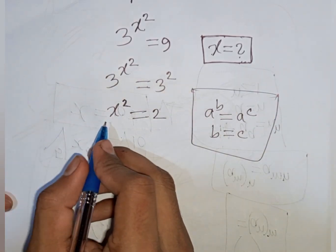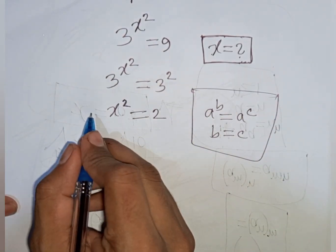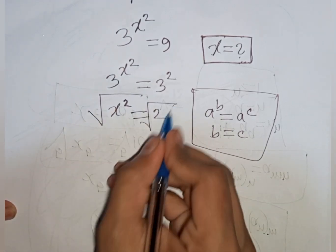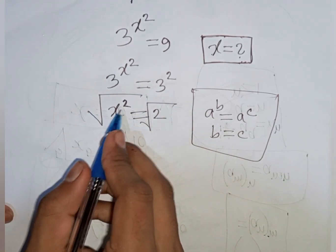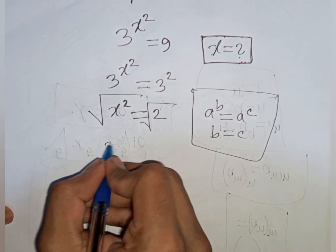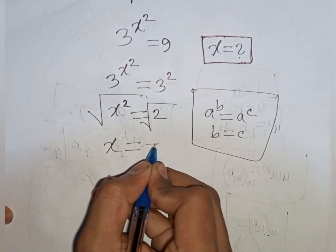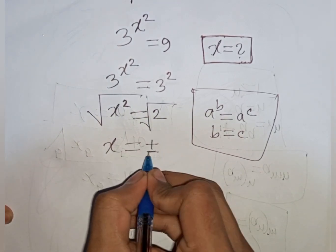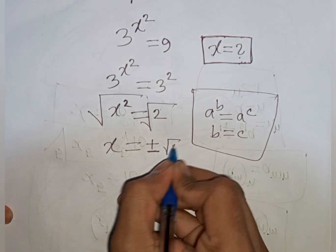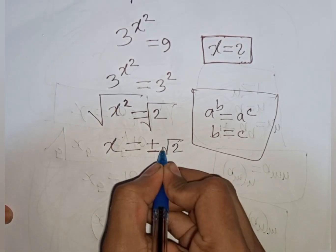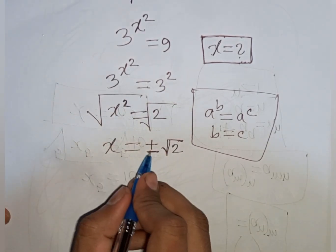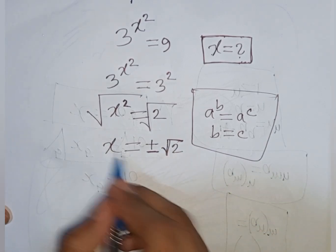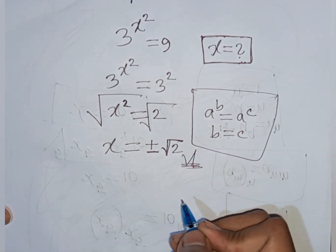Now we need the value of x. We apply the square root to both sides: square root of x squared equals square root of 2. This square will be cancelled, so x is equal to plus or minus the square root of 2. So plus or minus square root of 2 is the value of x. This is our final answer.